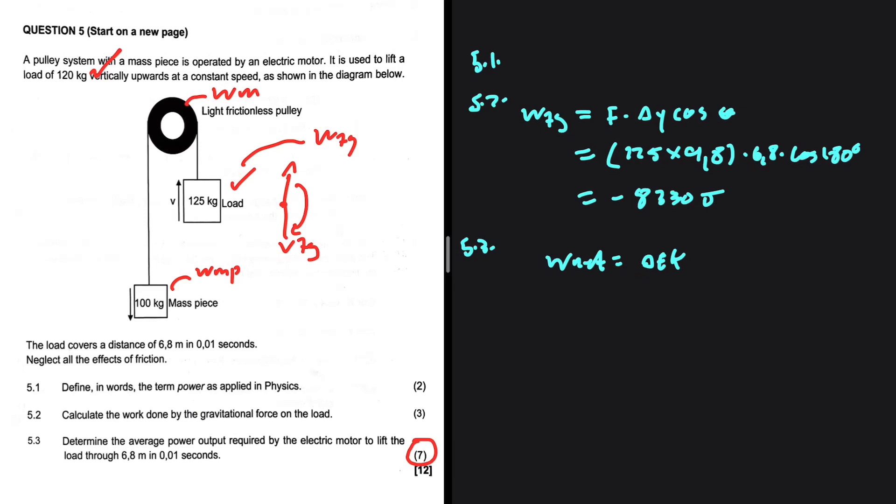We can set up our equation in the following way: the work done by the motor plus the work done by the mass piece plus the work done by Fg on the load equals zero. We want the work done by the motor. We have the work done by Fg on the load. We just need to find the work done by the mass piece.